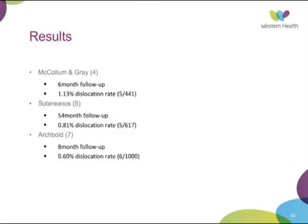Regarding results: McCollum and Gray showed a 1.1% dislocation rate in 441 hips at six months — an acceptable early stability result. Terry Arnos followed patients for over four years with a 0.81% dislocation rate in 617 hip replacements. Archbold had a 0.6% dislocation rate out of 1,000 hips at eight months. These results reassure us that use of the transverse acetabular ligament is valid.